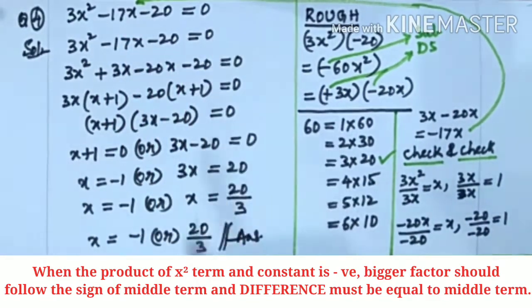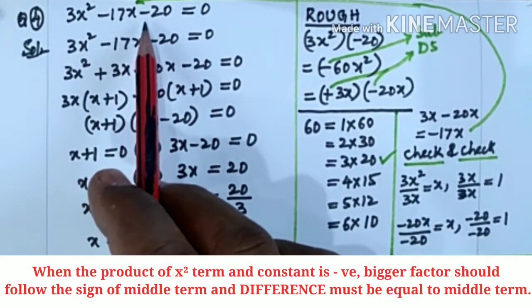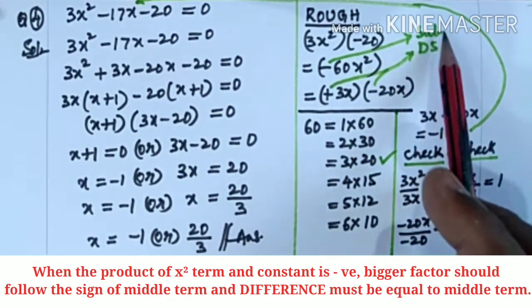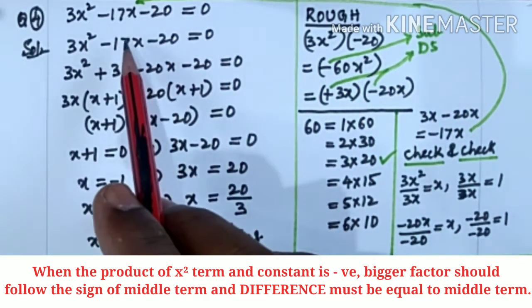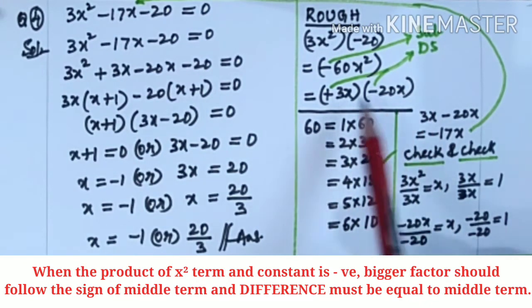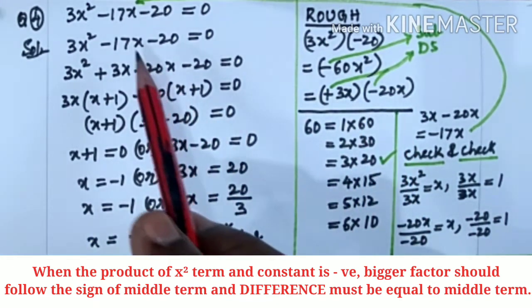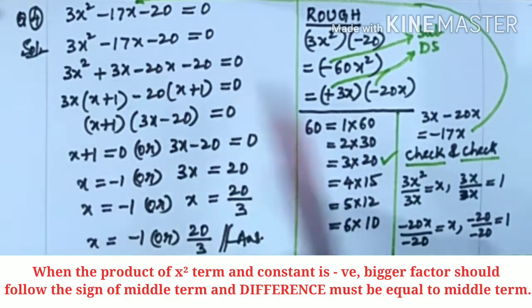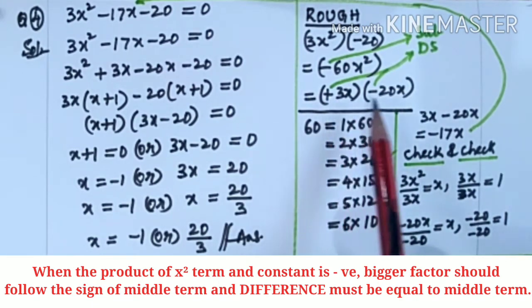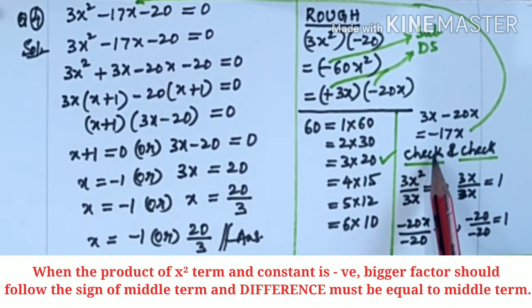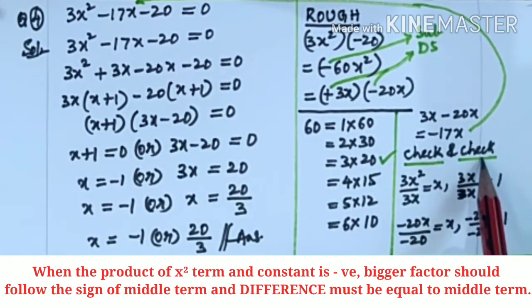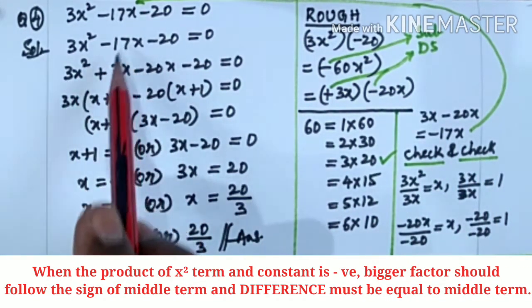3x² - 17x - 20 = 0. Observe carefully — here minus, here minus. 3x² into minus 20 is minus 60x². Subtraction, different signs. After subtraction we should get 17. So we take 3 and 20: 3x and 20x. These two must be of different signs. Since we have minus here, the bigger one should follow minus sign. So minus 20x and plus 3x. Instead of minus 17x, we write these two.